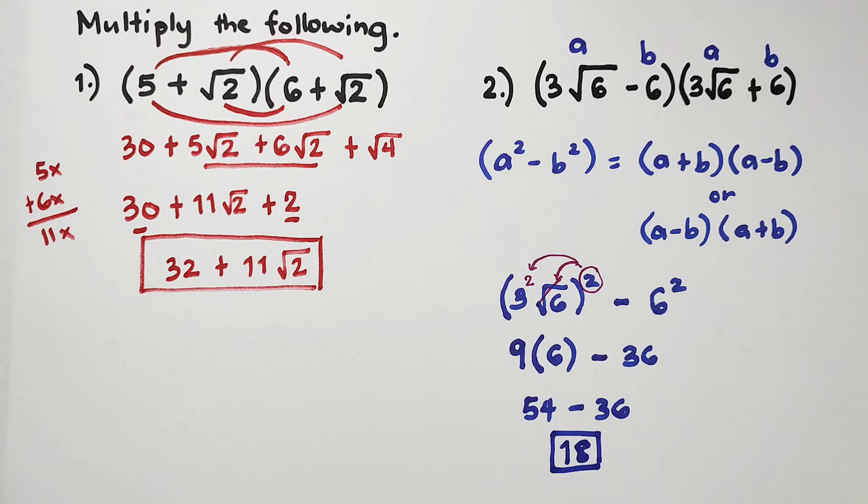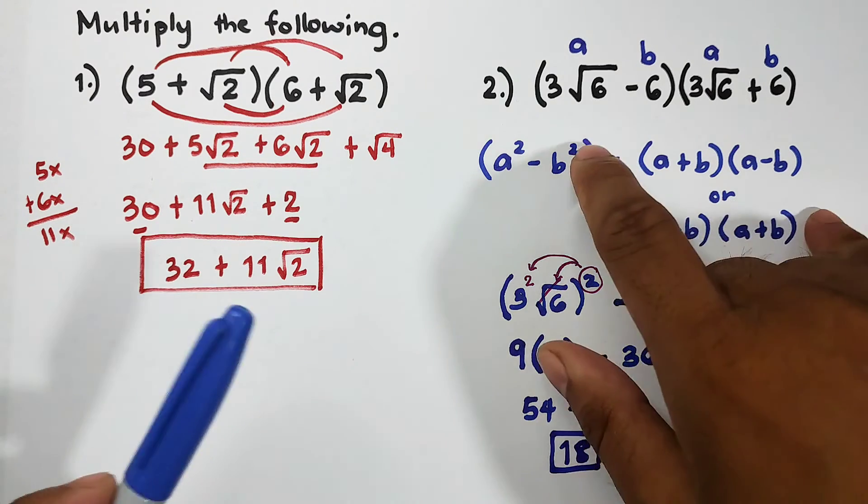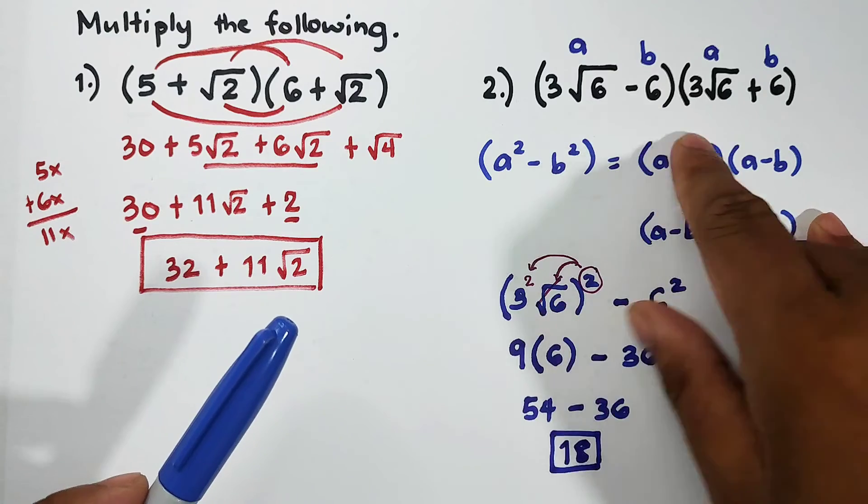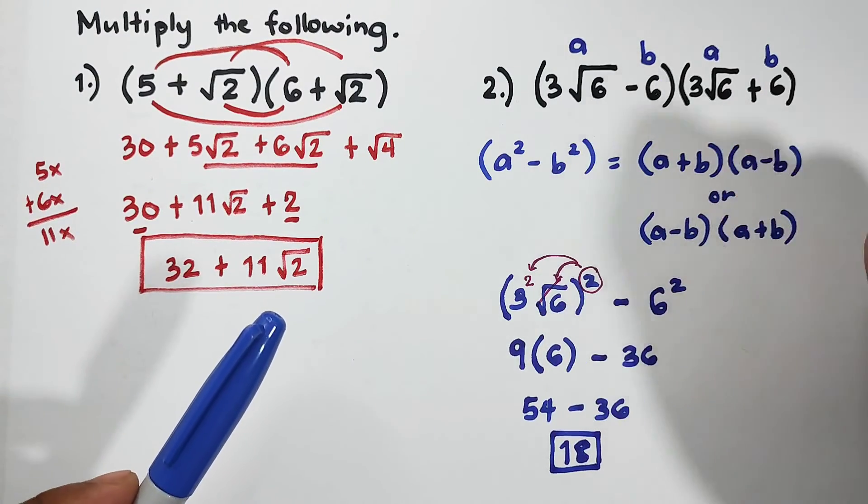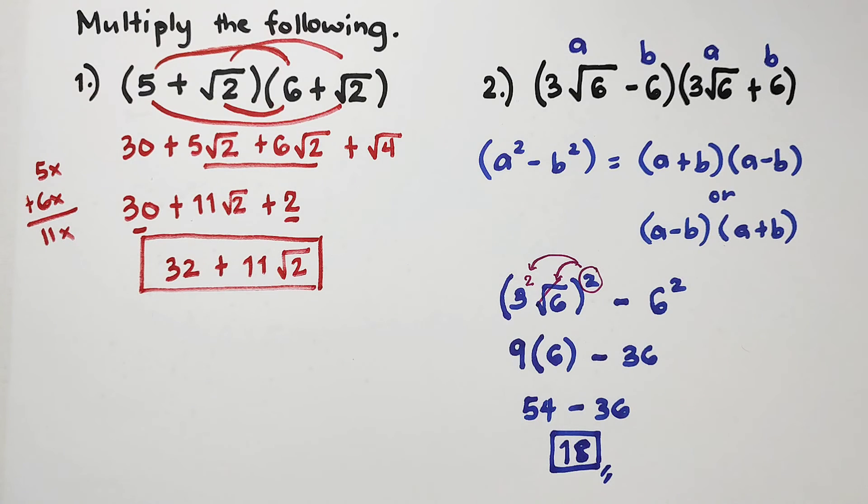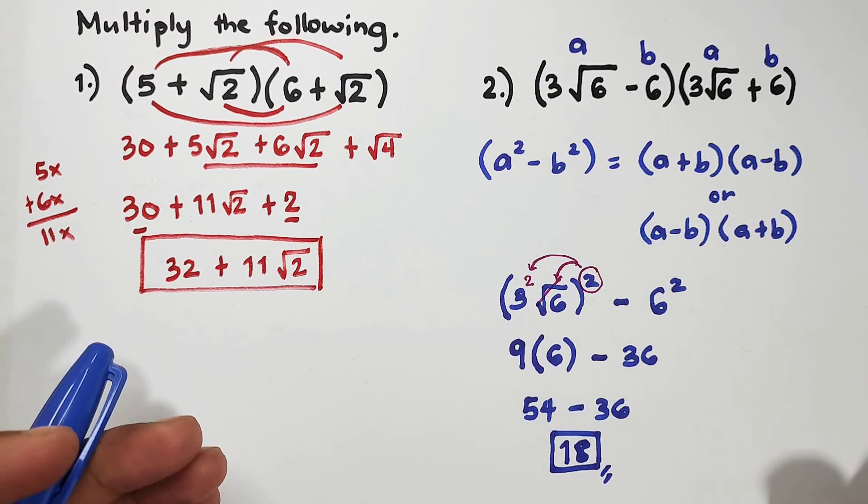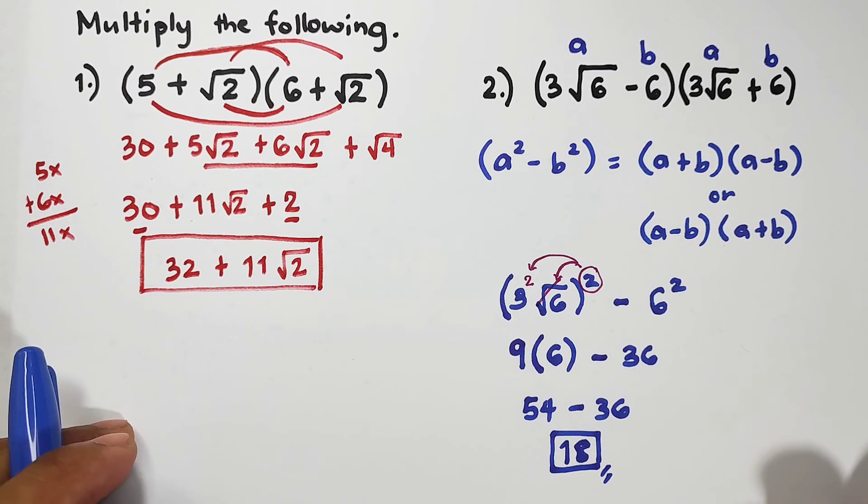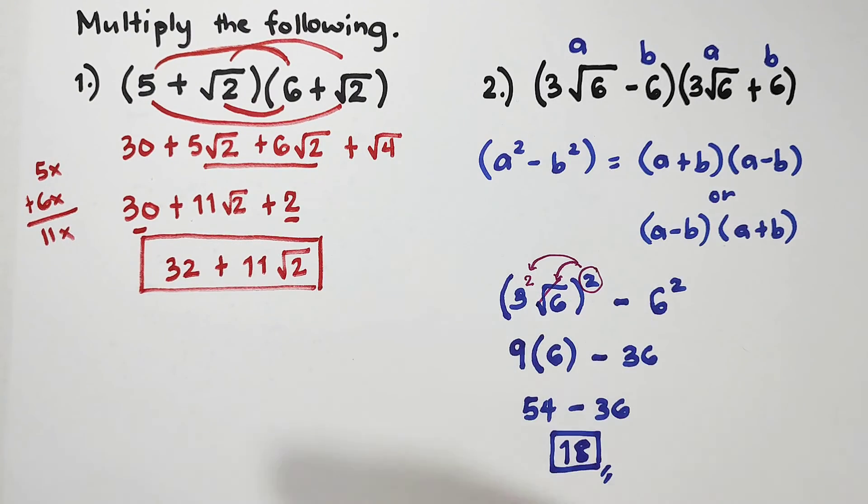This is the product between 3 square root of 6 minus 6 and 3 square root of 6 plus 6. I hope you learned something from this video on how to multiply two binomials that include radicals. If you're new to my channel, don't forget to like and subscribe and hit the bell button for the latest uploads. It's me, Teacher Going. Maraming salamat, bye!